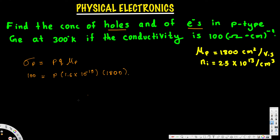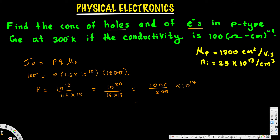Rearranging the equation, p = σ / (q·μp). Substituting values: p = 10²⁰ / (1.6 × 1800). Canceling zeros and simplifying — 10²⁰ divided by (16 × 180) — we get 10²⁰ / 2880, which gives approximately 3.47×10¹⁷ holes per cm³. This is the majority carrier (hole) concentration.